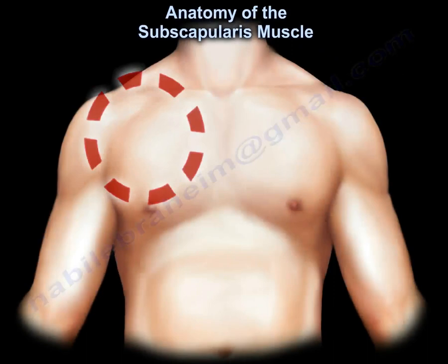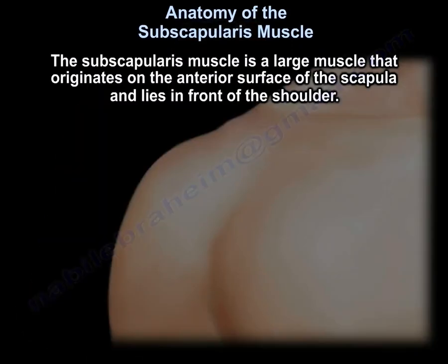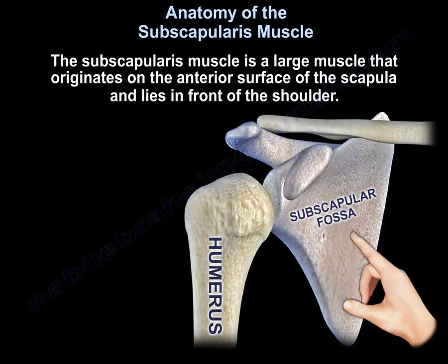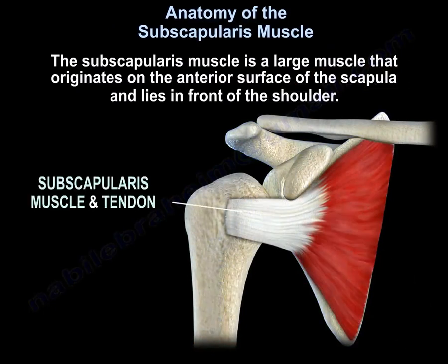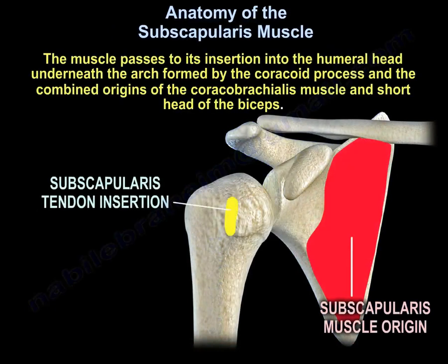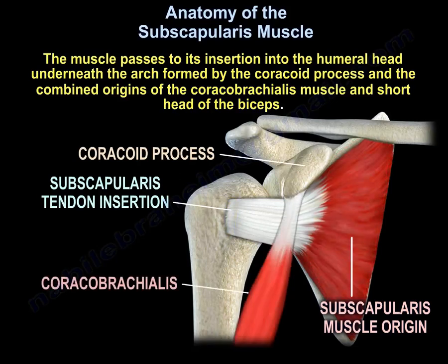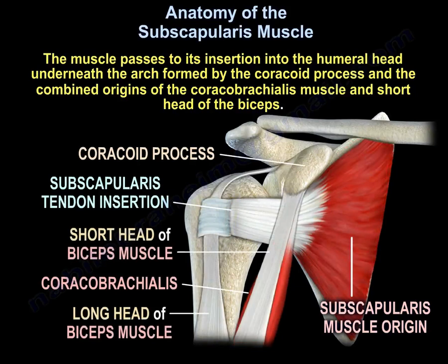Anatomy of the subscapularis muscle. The subscapularis muscle is a large muscle that originates from the anterior surface of the scapula and lies in front of the shoulder. The muscle passes to its insertion into the humeral head underneath the arch formed by the coracoid process and the combined origin of the coracobrachialis muscle and the short head of the biceps.